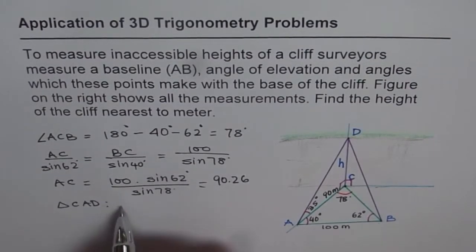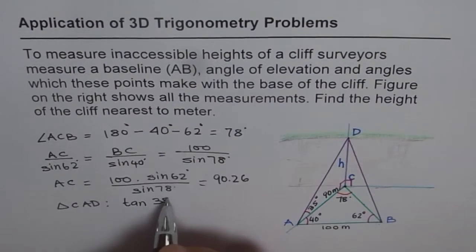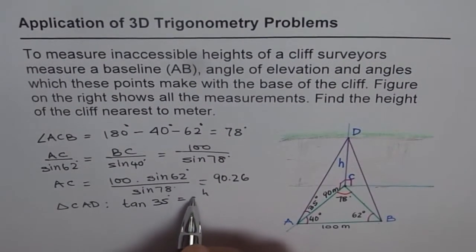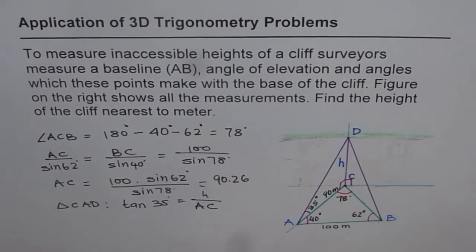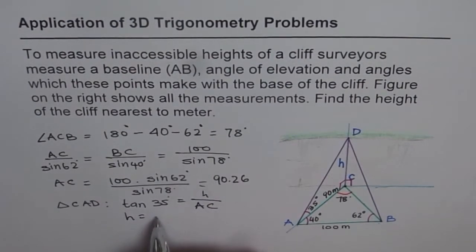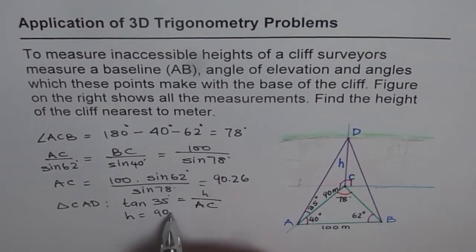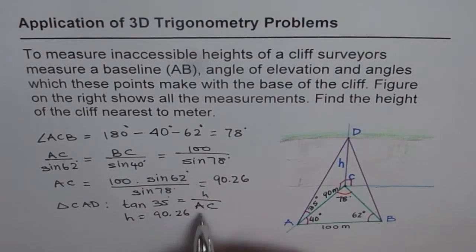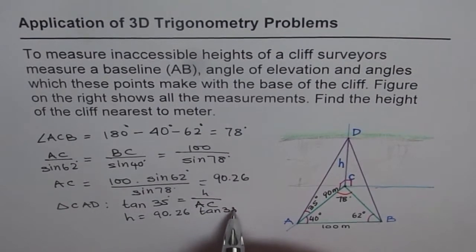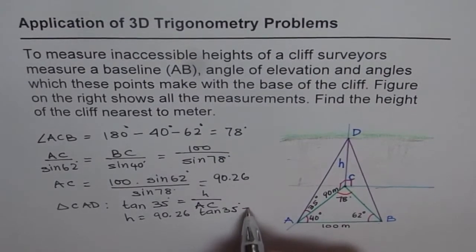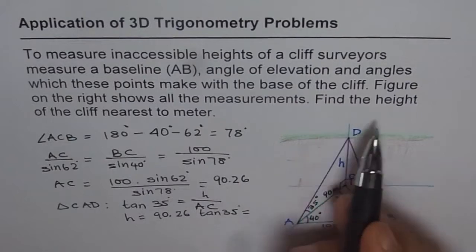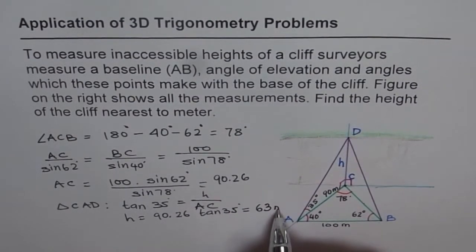So tan of 35 is equals to what? Opposite side is H divided by the adjacent side, which is AC. So from here, you can get height H. So height is equals to AC, which is 90.26 times tan of 35 degrees. So it is, we already have 90.26 in the calculator times tan of 35 degrees. Gives us the answer as 63.2. So we'll round this to the nearest meter, which is 63. So we get our answer as 63 meters.